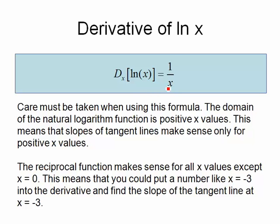Yet it makes no sense to put negative 3 into the natural logarithm function. So be real careful when you're plugging numbers into the derivative to make sure that they actually make sense in the regular function because all the derivative is telling you is the slopes of the tangent lines on that original function.